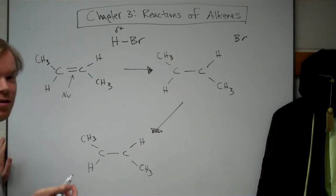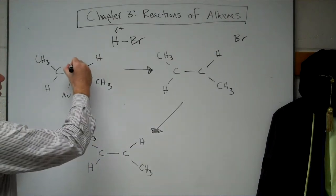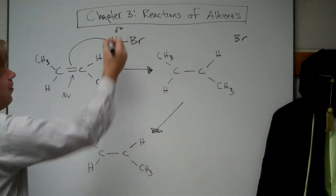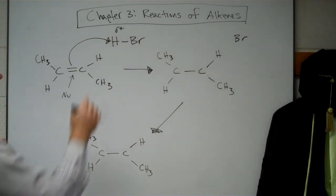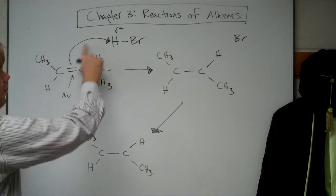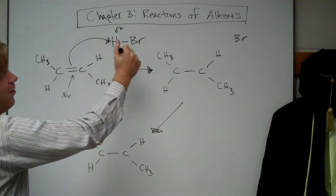So we use our mechanism rules. We draw a curved arrow from the nucleophile to the electrophile. And then, since we've added a new bond, new electrons, the hydrogen has to lose the old ones.